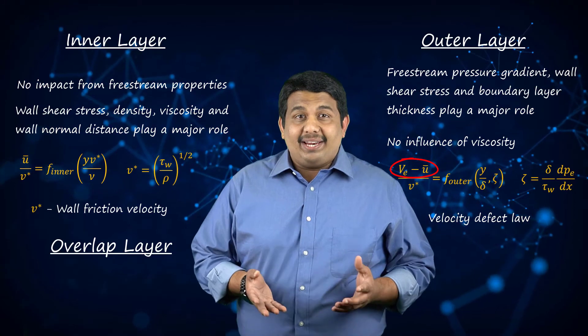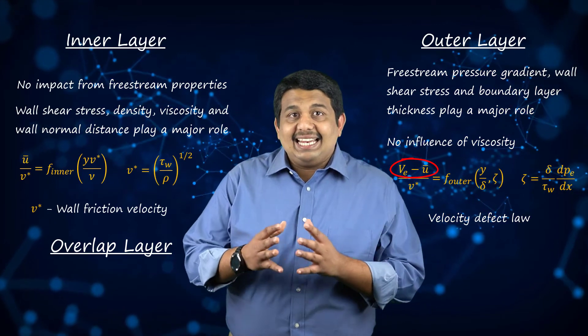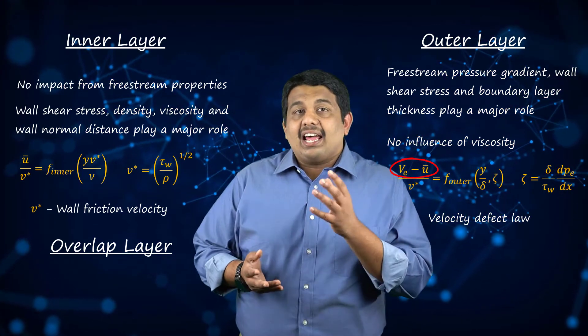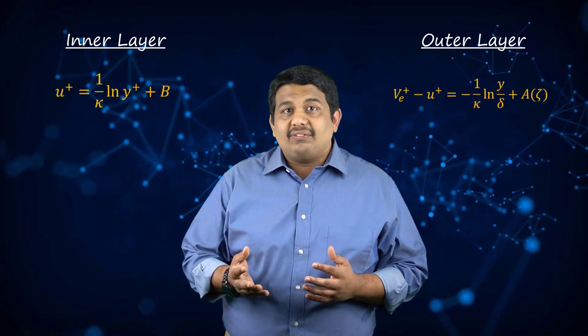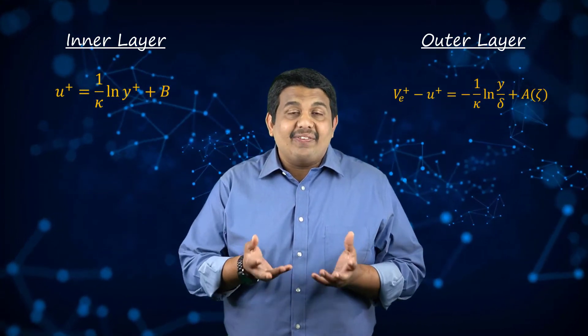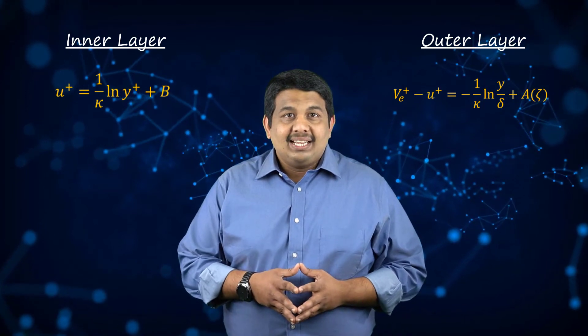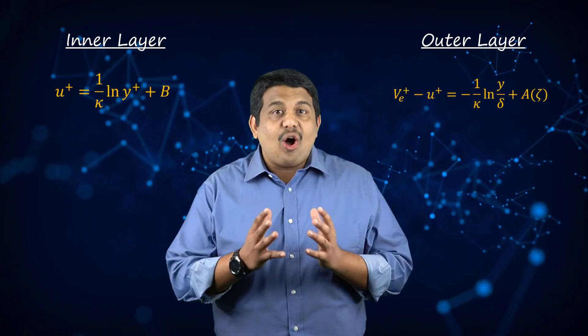In the overlap region, the F_inner and F_outer functions seen in the relations here are obtained by imposing a velocity match. By doing so, we can show that these two functions are in fact logarithmic. Based on this, we can rewrite the velocity profiles for the two layers in the overlap region as shown here. These two relations are equivalent to each other. This logarithmic velocity profile distribution is generally referred to as the law of the wall.